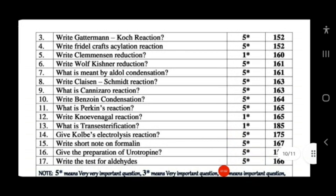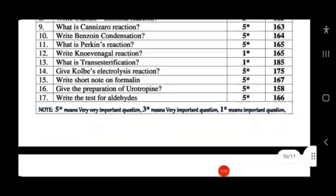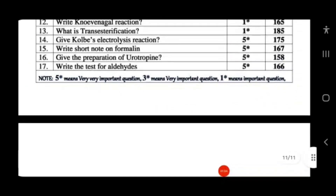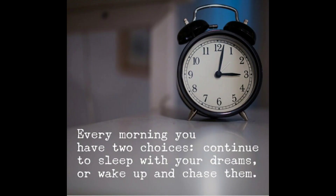Also study the conversion of benzaldehyde to cinnamic acid, transesterification, and Kolbe electrolysis reaction. Write a note on formalin. Study the preparation of urotropin and tests for aldehyde. Formalin is a 40% aqueous solution of formaldehyde.